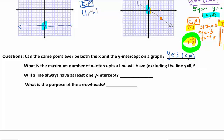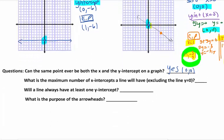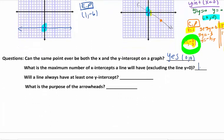Number two, what is the maximum number of x-intercepts a line will have, excluding my special case, which is y equals 0? So if we look at all of my examples, if it's linear, there should be only one intercept, except for the special case.